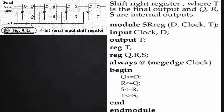The next shift register is a four-bit serial input serial output shift register. Like before, we define a module with a user-defined name, with inputs d, clock, and output t, where t represents the final single-bit output from the last flip-flop. The output t must be declared as register type.